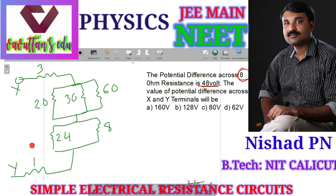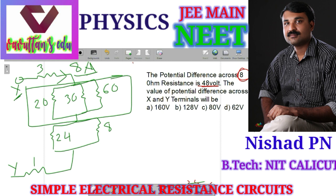We are assuming an 8 ampere current is leaving from terminal X. To simplify the circuit, for the parallel section with 20 ohm, 30 ohm, and 50 ohm, the equivalent resistance is 1 by R-equivalent equal to 1/20 plus 1/30 plus 1/50.